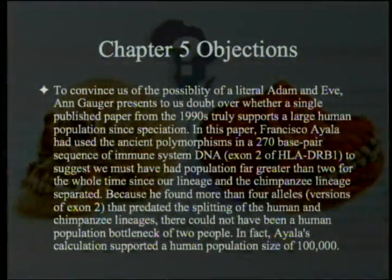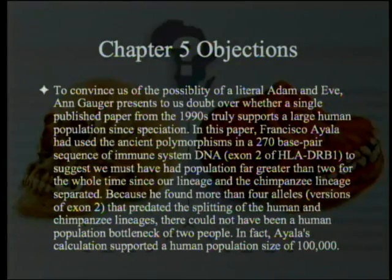Gauger is not arguing that this is the way it happened. She is simply arguing that the science doesn't stand in the way of it — which is a little bit different. To convince us of the possibility of a literal Adam and Eve — and that's fair, it is the possibility, not a proof. Gauger presents doubt over whether a single published paper from the 1990s truly supports a large human population since speciation.